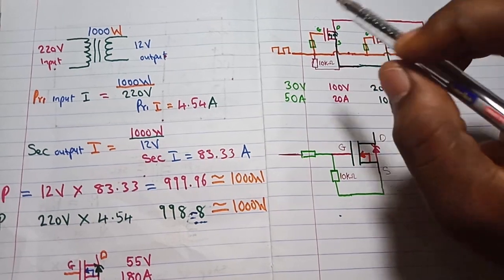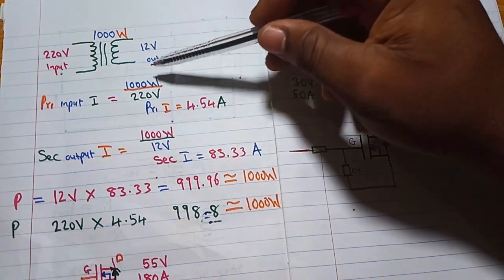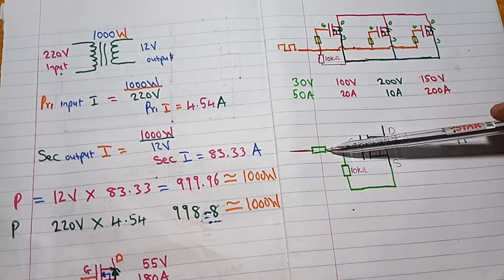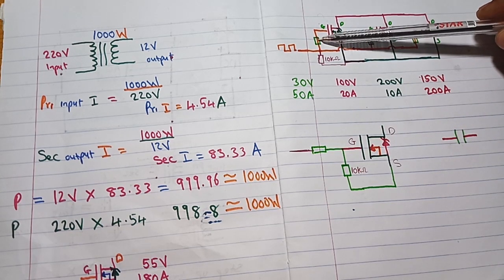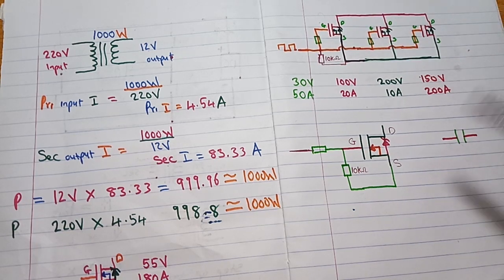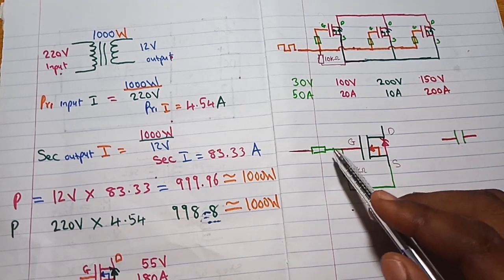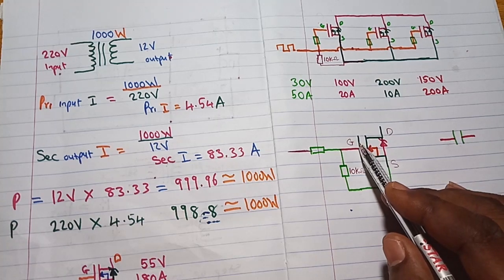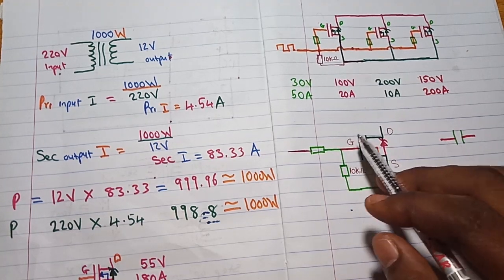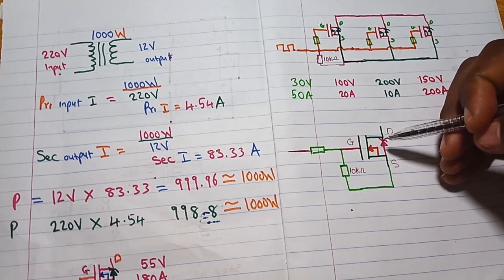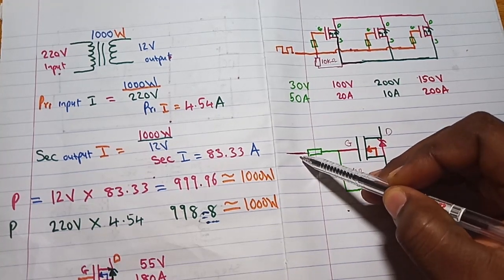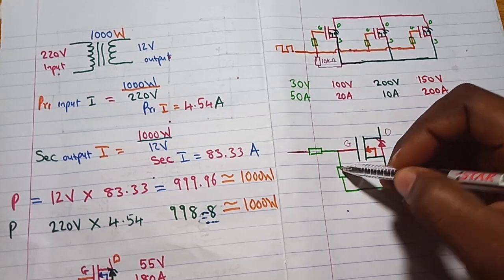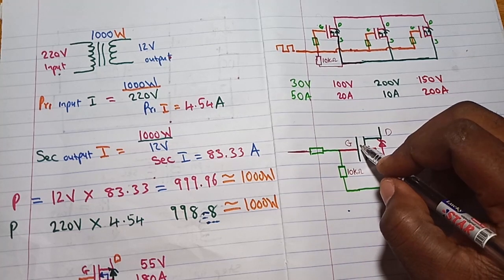Now let's talk about the MOSFET gate resistor, which you will see on some MOSFETs. A MOSFET acts like a capacitor: once you apply a voltage to the gate, it stores a charge — as shown by the capacitor symbol in the MOSFET symbol. This stored charge will cause current to continue flowing from drain to source even if you remove the input voltage from the gate. To stop it, you need to pull the gate low so that it discharges the stored charge in the MOSFET.